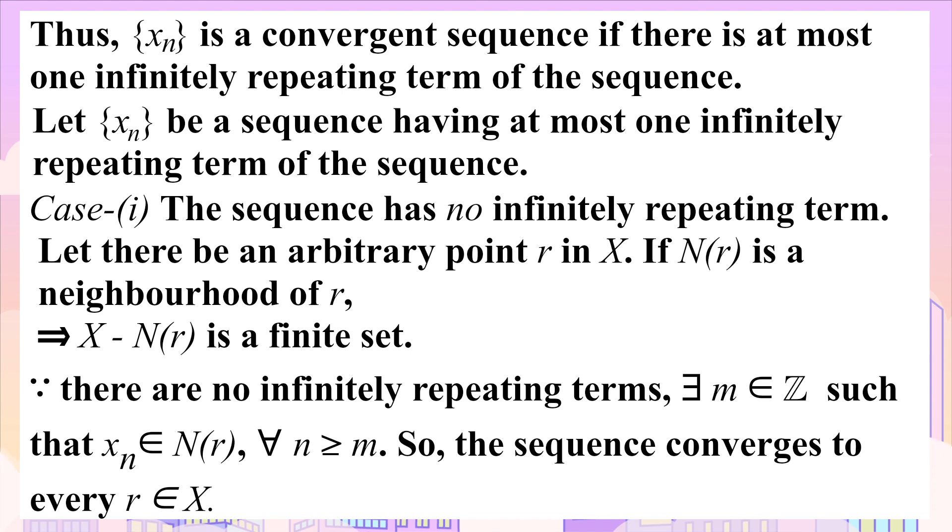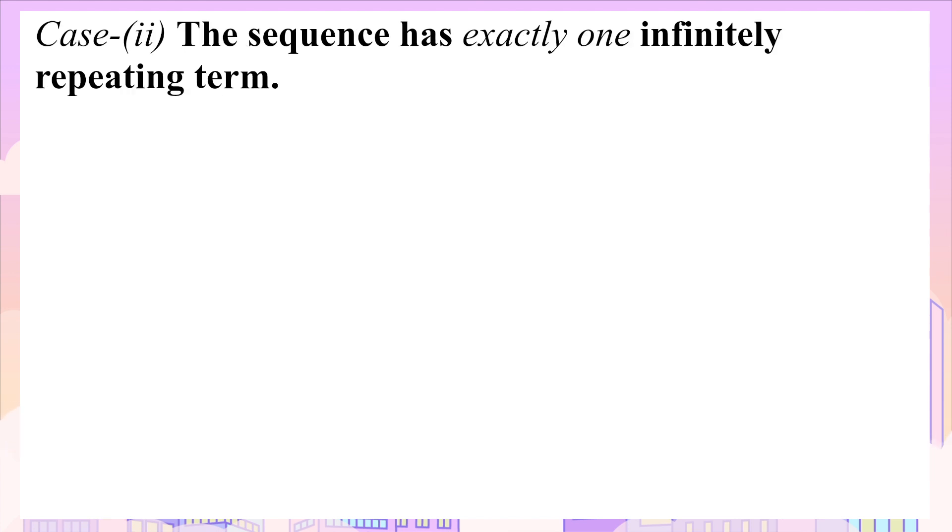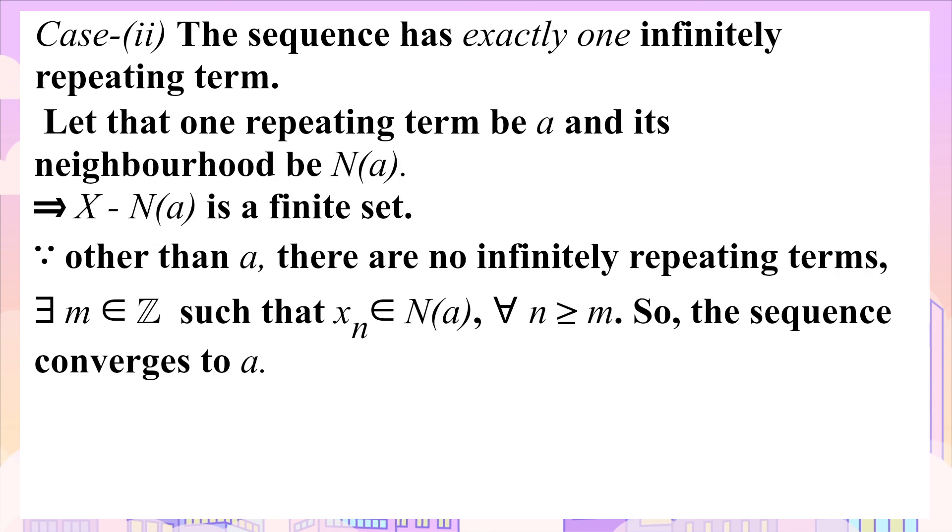So the sequence converges to any value of r in X. Next we discuss the second case of the sequence having exactly one infinitely repeating term. Let that one repeating term be a and its neighborhood be N(a). Then we proceed in the similar way as in the first case. Hence the sequence converges to point a.